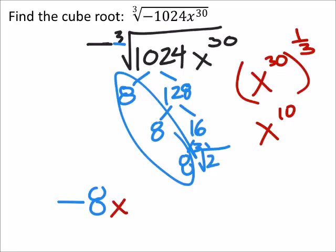So it ends up being x to the power of 10. So negative 8 times x to the power of 10, and then we still have the cube root of 2 from this term here.